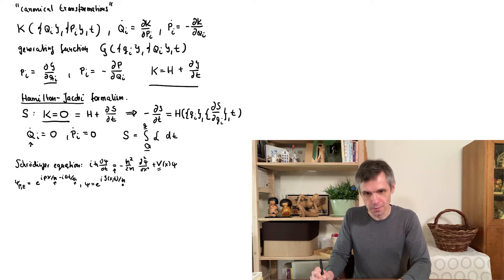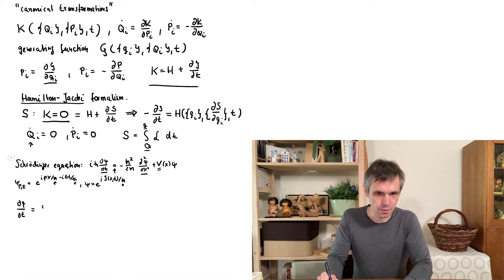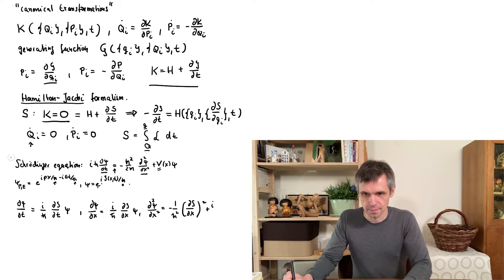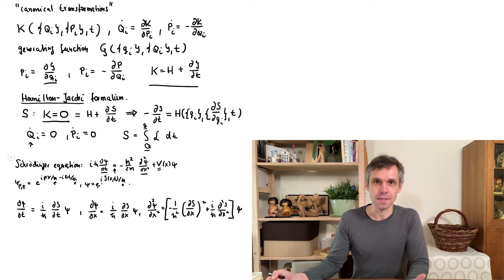Now we insert this into this equation and work out the derivatives that appear here according to the chain rule. So we start with the derivative with respect to time and then according to the chain rule we get these factors i divided by h-bar times the derivative of this function s with respect to time times the derivative of the exponential function by its generic argument but this is just the function as we had written it down there. And then if we do the same with respect to position we obtain very similar expressions and in the second derivative we obtain two terms and again the factor of psi in front of all of this.